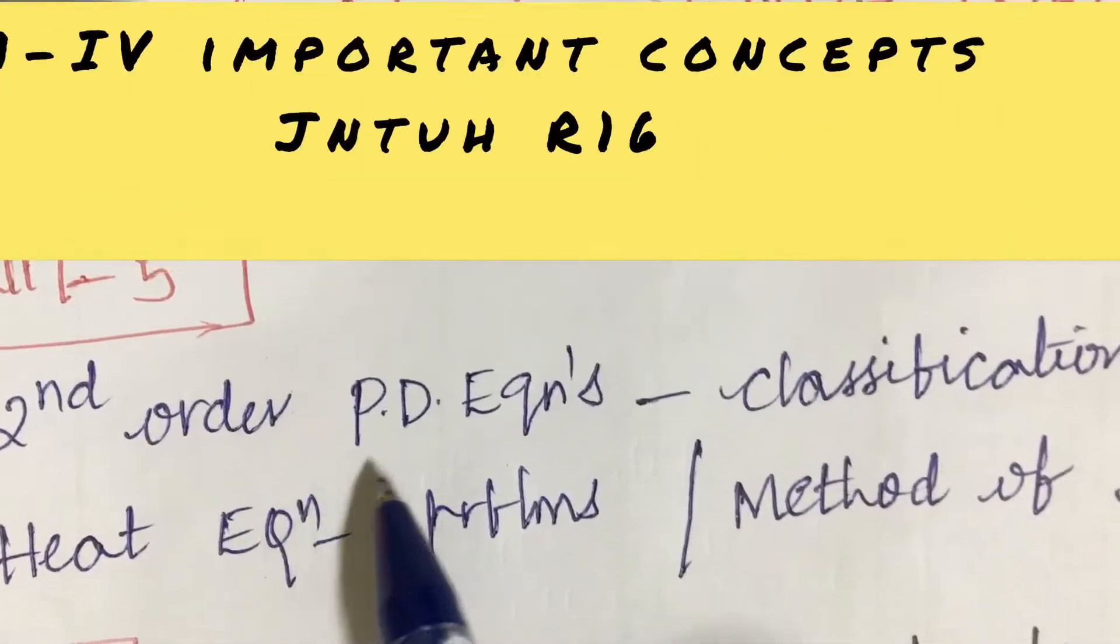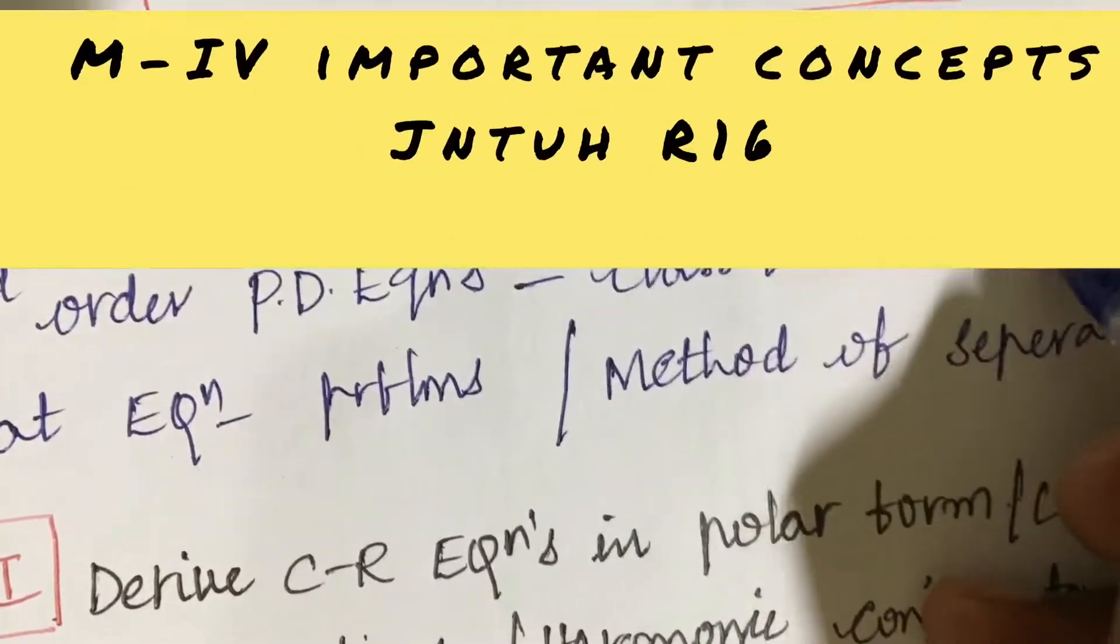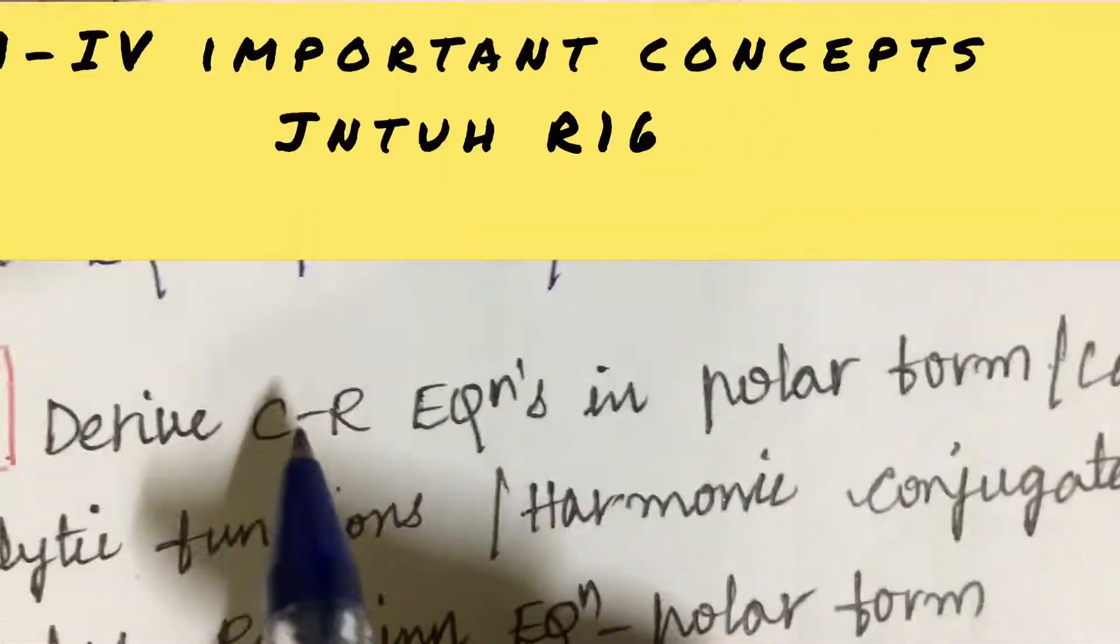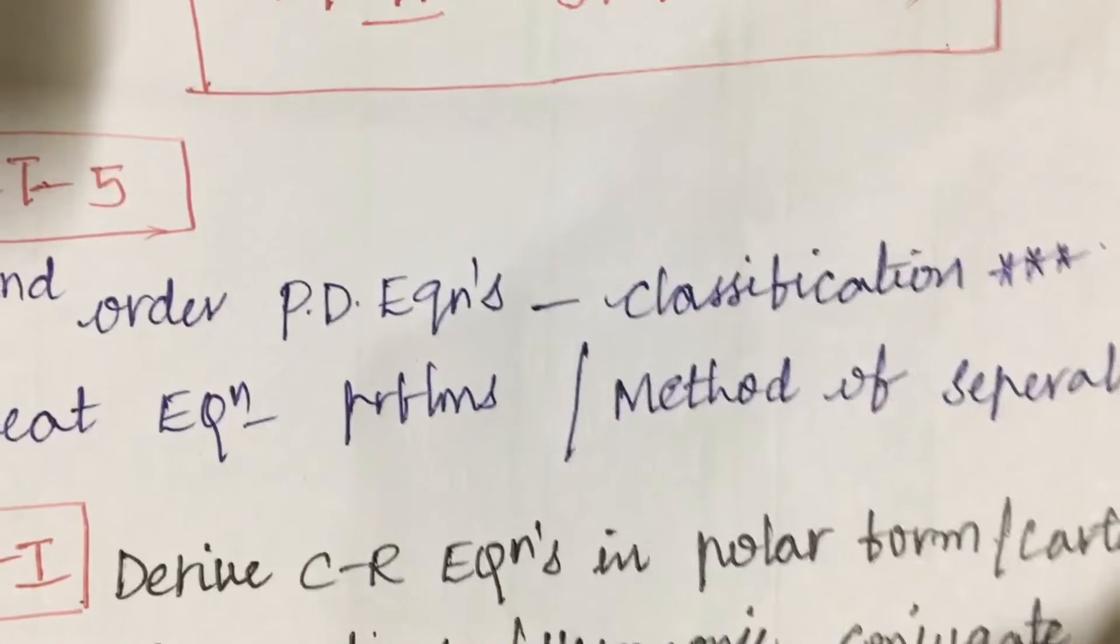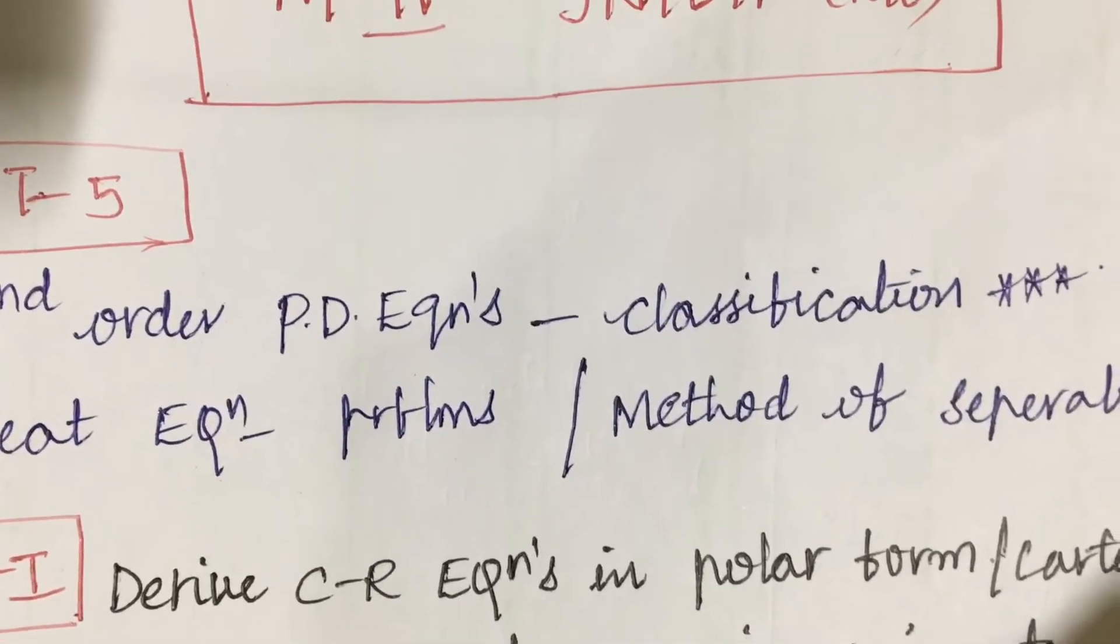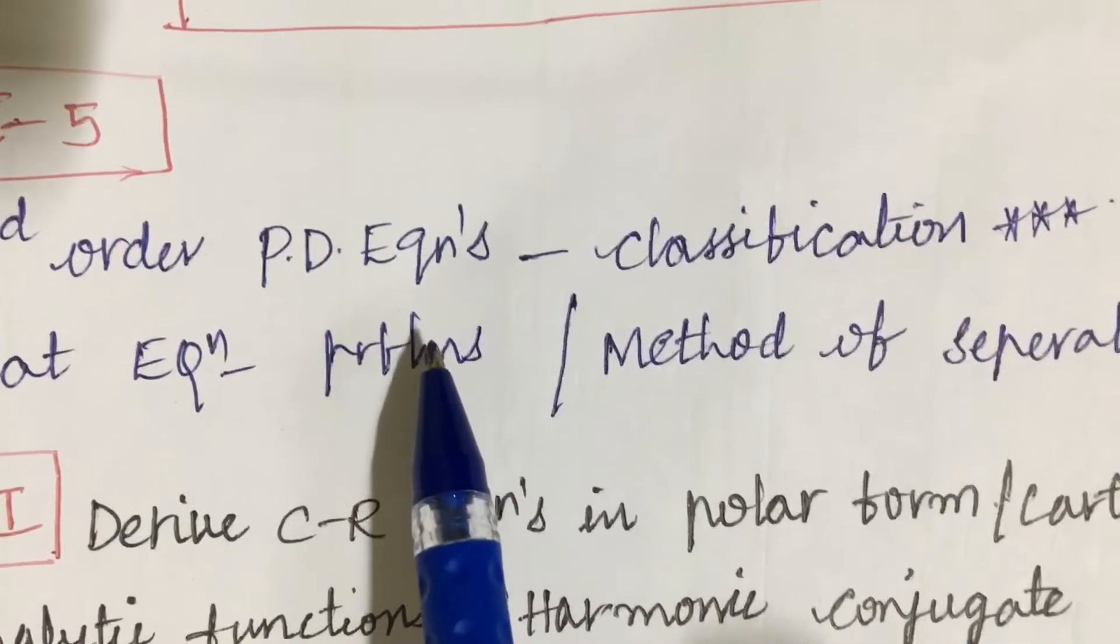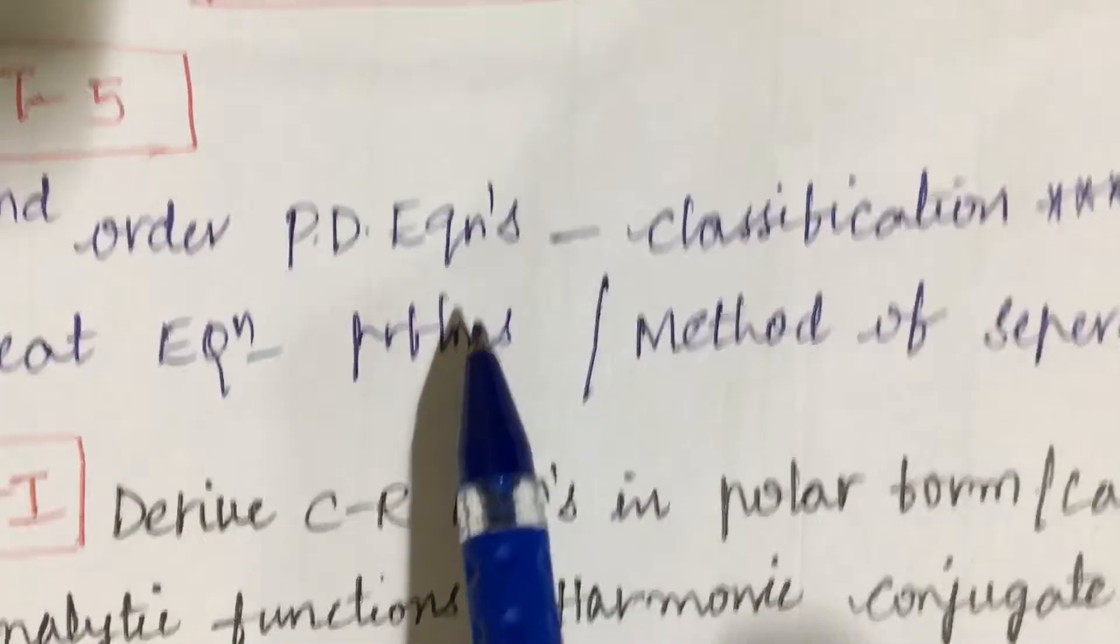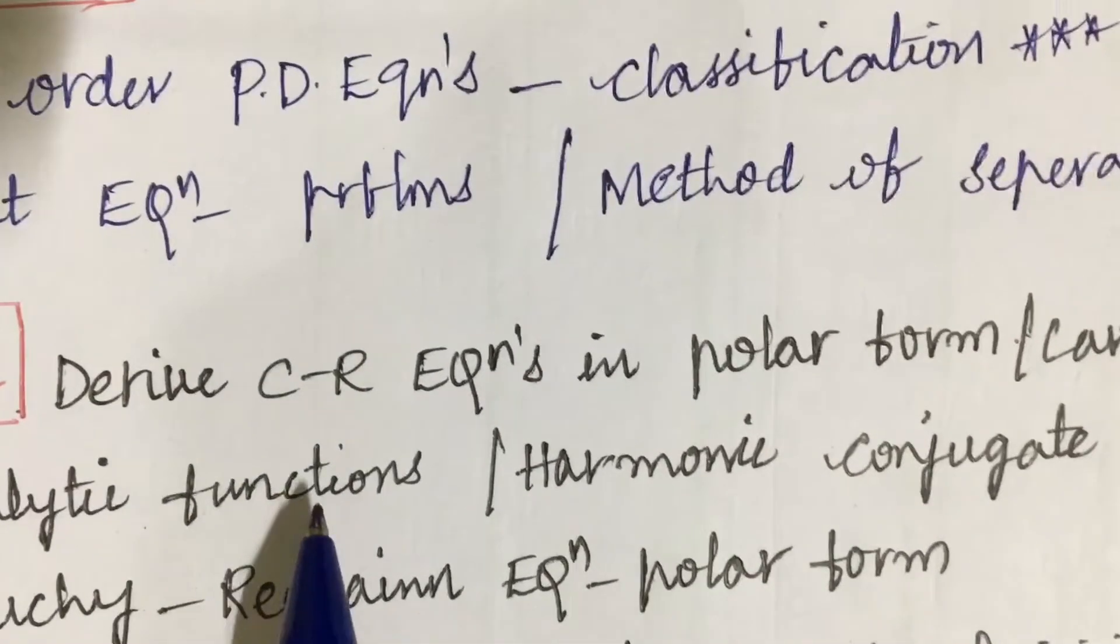The eighth question is about second order partial differentiation equations as well as their classification. Heat equation problems and method of separable variables have not come up with the relation or equation here. You are supposed to work out all these aspects related to the concepts, formulas, and derivations related to unit one.